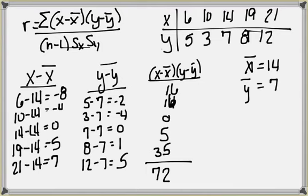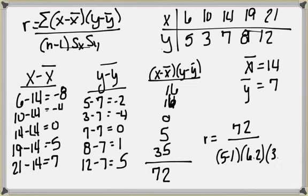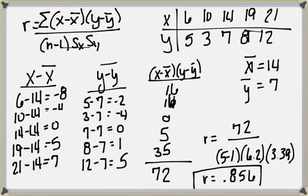Now we plug everything into our formula. R equals 72 over (N minus 1) times the standard deviations of X and Y. We have 5 values, so N minus 1 is 4. The standard deviation of X is 6.2 and of Y is 3.39. By my calculations, I get 0.856, which indicates that we have a strong positive linear relationship for this data. That's how we do it by hand — it can be pretty tedious, especially with a lot of data values, but that's the process.